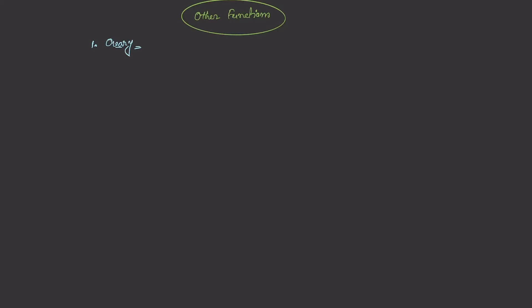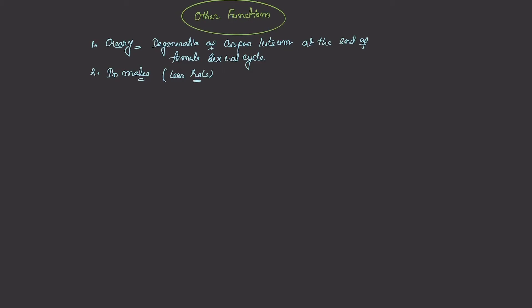Oxytocin is also released from the ovary, where it is mainly responsible for the degeneration of the corpus luteum at the end of the female sexual cycle. In males, oxytocin has a lesser role, but oxytocin levels in males are increased during orgasm and during the ejaculation process.